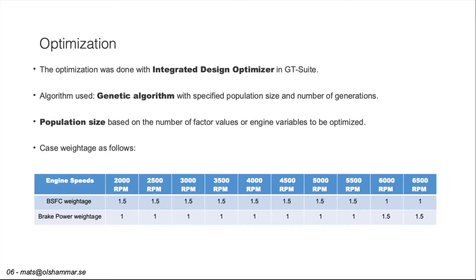The optimization was done with the integrated design optimizer in GT-Suite. We used a generic algorithm. For 2,000 to 5,500 RPM we had more priority on the brake specific fuel consumption than on the brake power. But for the top 6,000 to 6,500 RPM we had a higher priority on the brake power.